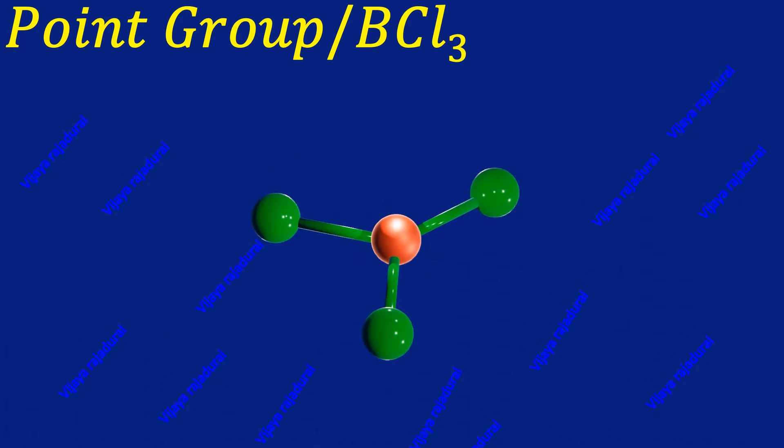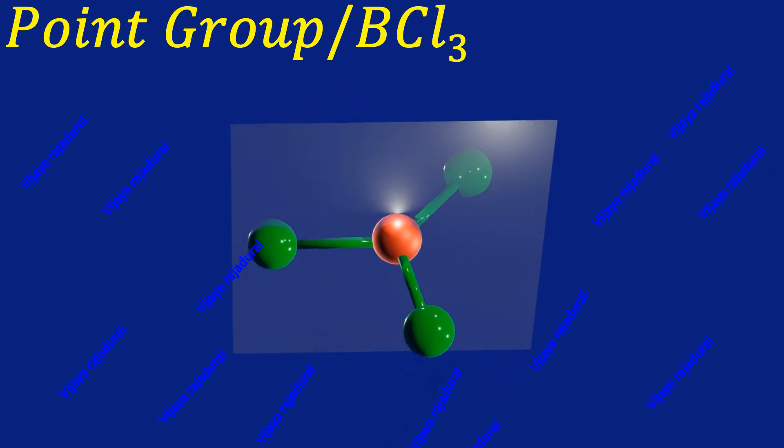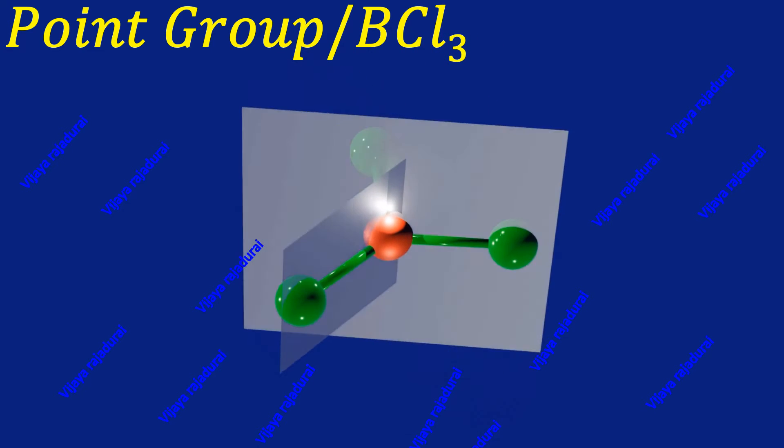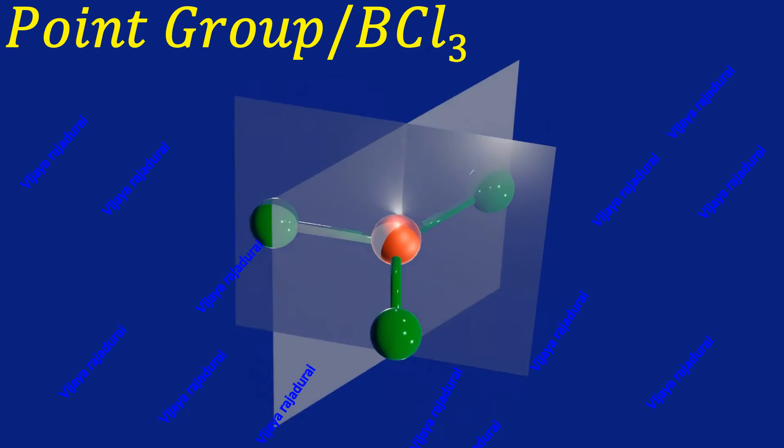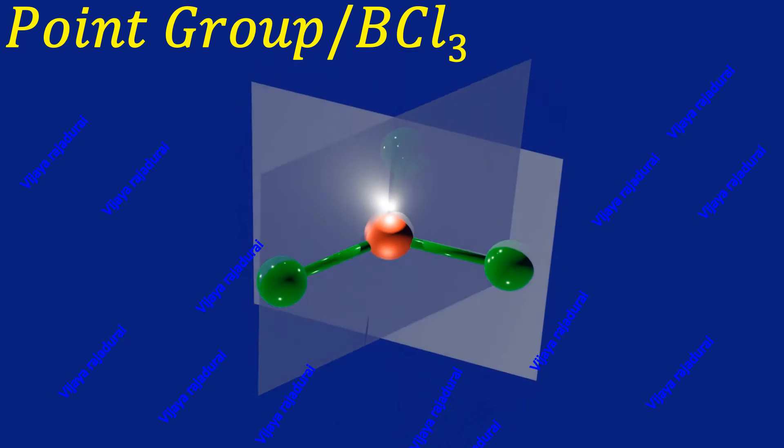Here you can see the first vertical plane between the first chlorine atom and boron atom, the second vertical plane between the second chlorine atom and boron atom, and the third vertical plane between the third chlorine atom and boron atom.